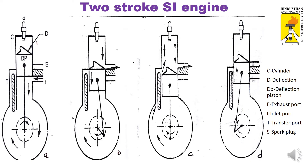Let's go to the working principle. See the diagram — positions A, B, C, D show four different piston positions. In position C, the air-fuel mixture is positively compressed and transferred through the transfer port to the top of the cylinder.